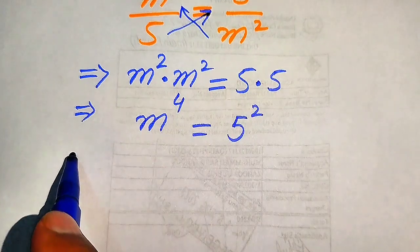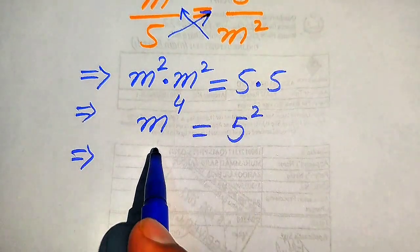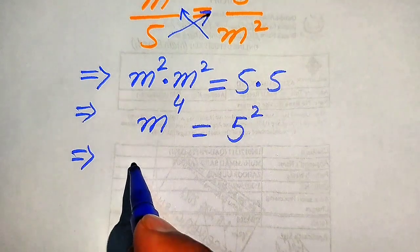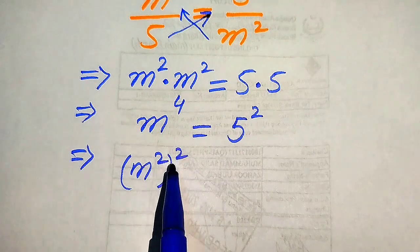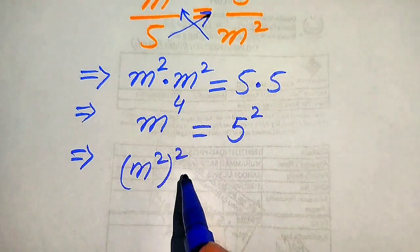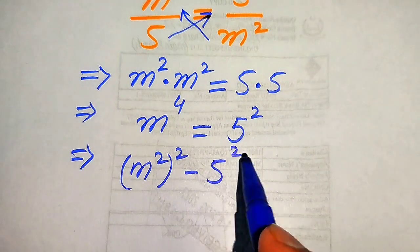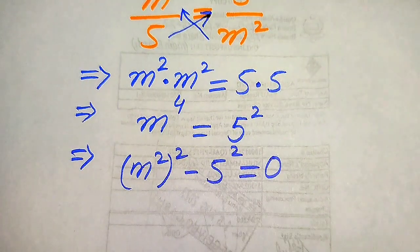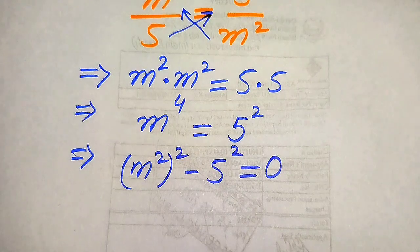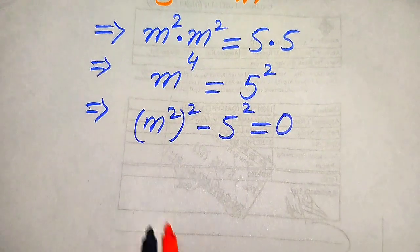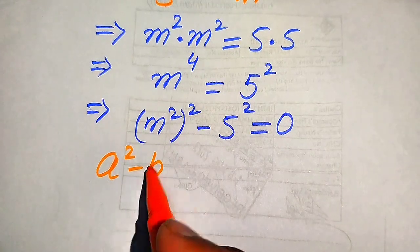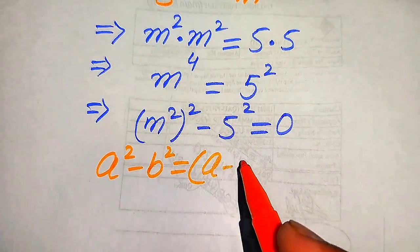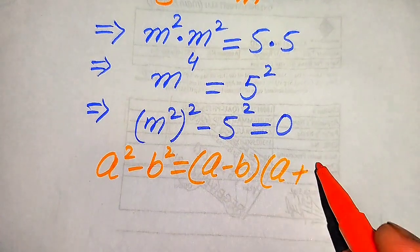In the next step, we move the term from the right hand side to the left hand side, so it becomes m to the power of 4, which we write as m square whole squared. We move 5 square to the left hand side, so it becomes minus 5 square, and this whole equation equals 0. Now we need to apply the algebraic formula: a square minus b square equals a minus b times a plus b.